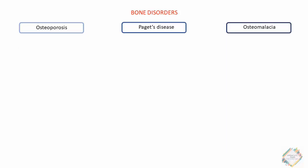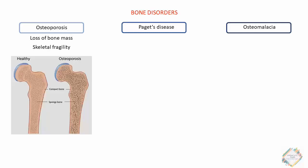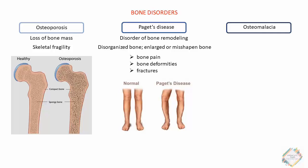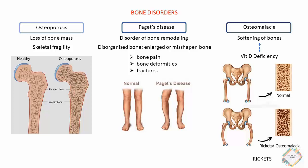We'll now discuss the three main bone disorders: osteoporosis, Paget's disease, and osteomalacia. Osteoporosis is characterized by progressive loss of bone mass and skeletal fragility. Paget's disease is a disorder of bone remodeling that results in disorganized bone formation and enlarged or misshapen bones; unlike osteoporosis, it is limited to one or a few bones, and patients experience bone pain, deformities, or fractures. Osteomalacia is a softening of the bones most often attributed to vitamin D deficiency; in children it is referred to as rickets.